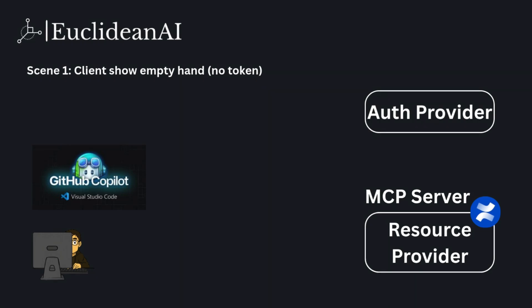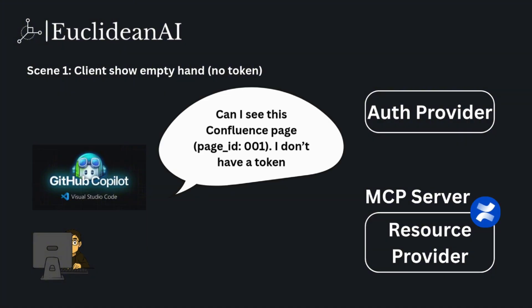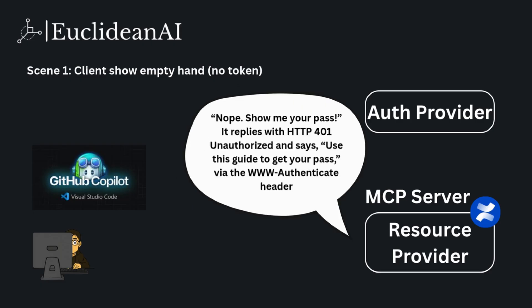In the roleplay, we have the user and the MCP client, which is GitHub Copilot in VS Code. We have the auth provider, as well as the MCP server, which is the Confluence MCP server we built in the previous projects. In scene one, the client sends a request without a token, asking to see a Confluence page with page ID 001. In response, the MCP server replies with HTTP 401 Unauthorized and says, use this guide to get your pass via the www-authenticate header.